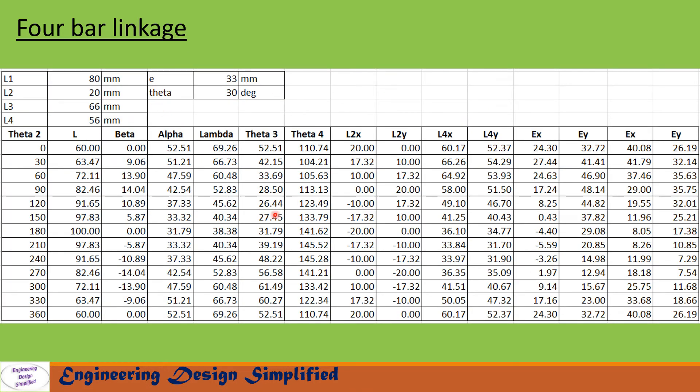Here we use the same problem from the previous video on position and displacement analysis of four-bar linkage. The dimensions are: L1 = 80mm (fixed link), L2 = 20mm (crank), L3 = 66mm (coupler), L4 = 56mm (follower), E = 33mm, and theta = 30 degrees.